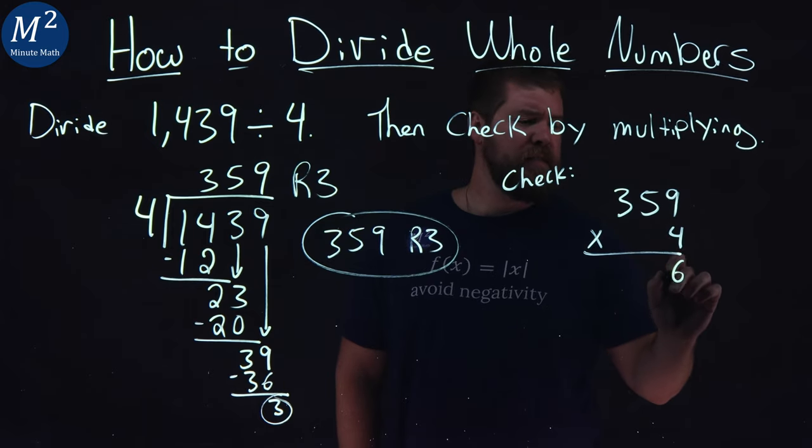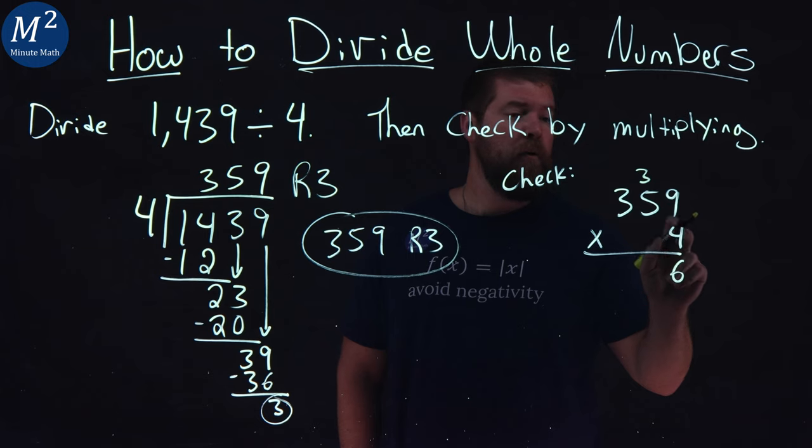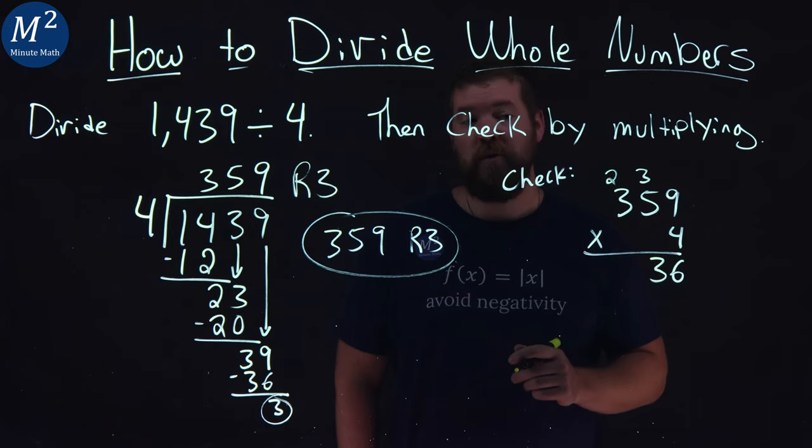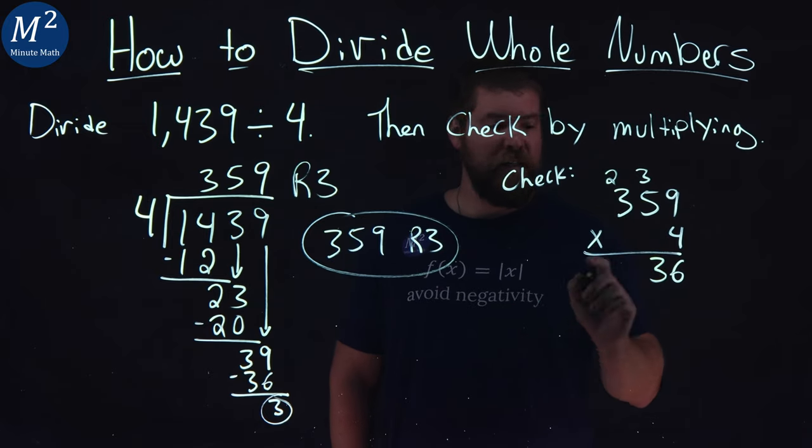4 times 9 is 36, 6 carry the 3. 4 times 5 is 20, plus 3 is 23, 3 carry the 2. 4 times 3 is 12, plus 2 is 14.